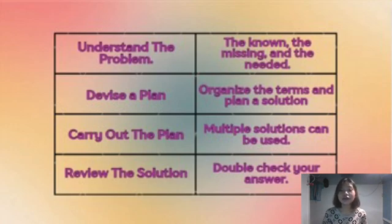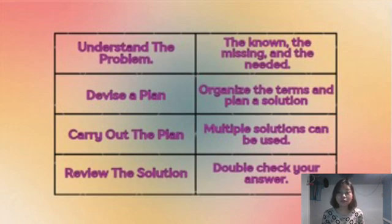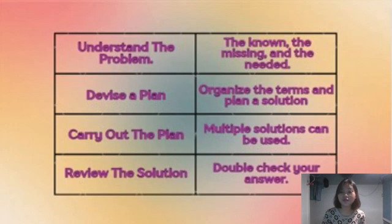As long as the problem is stated correctly and the known information, the missing information, and the information needed to solve the problem is made clear. In reviewing the solution, you must check if the answer to the problem correlates with the facts of the problem. This can be done through double-checking your answer by utilizing the known and unknown information to correlate with the facts of the problem.